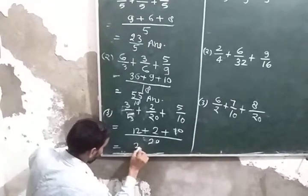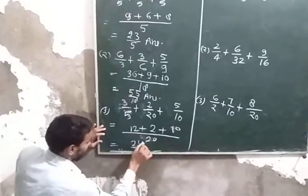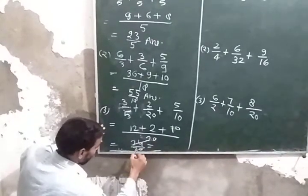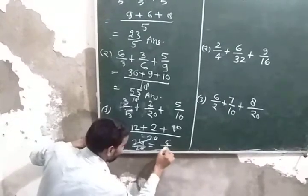This is 24 upon 20. And then can we cut each other? This should be 4, 6 times and this should be 5. This is the final answer.